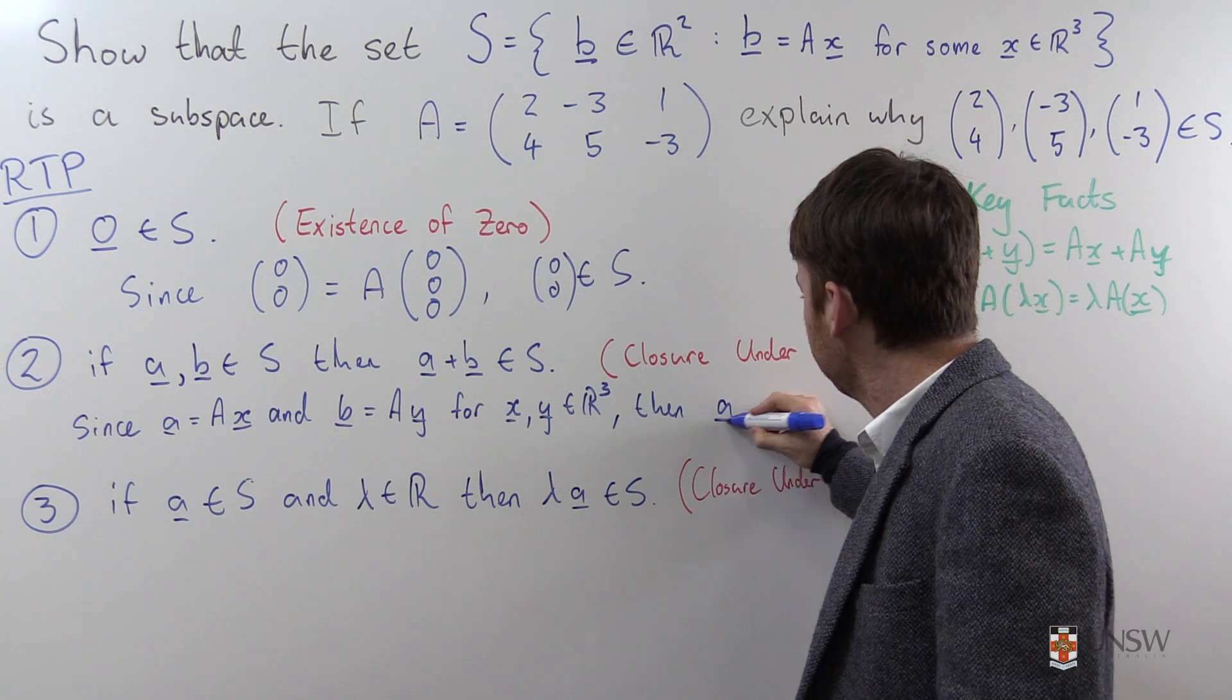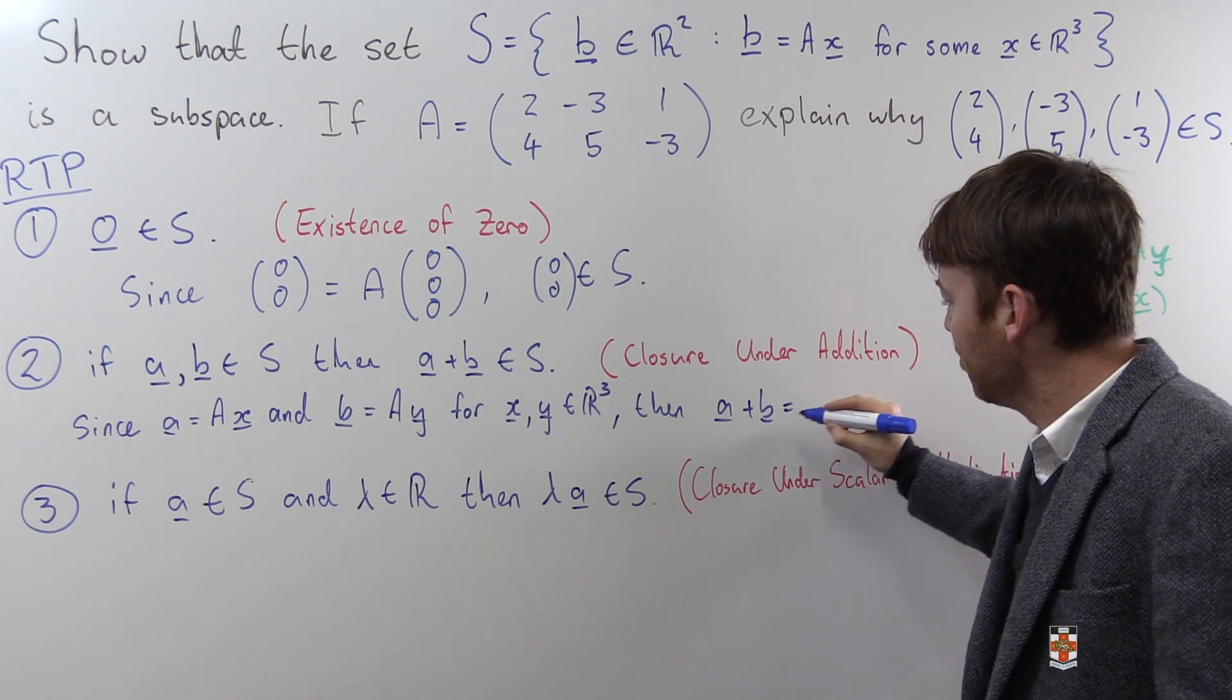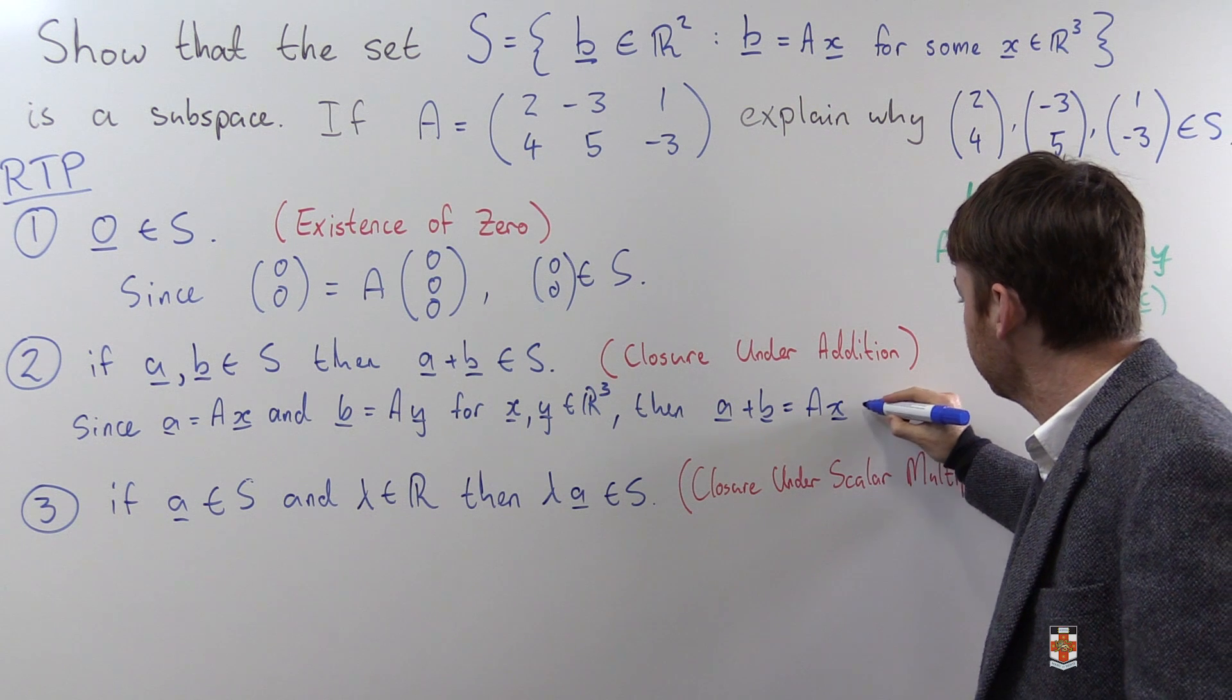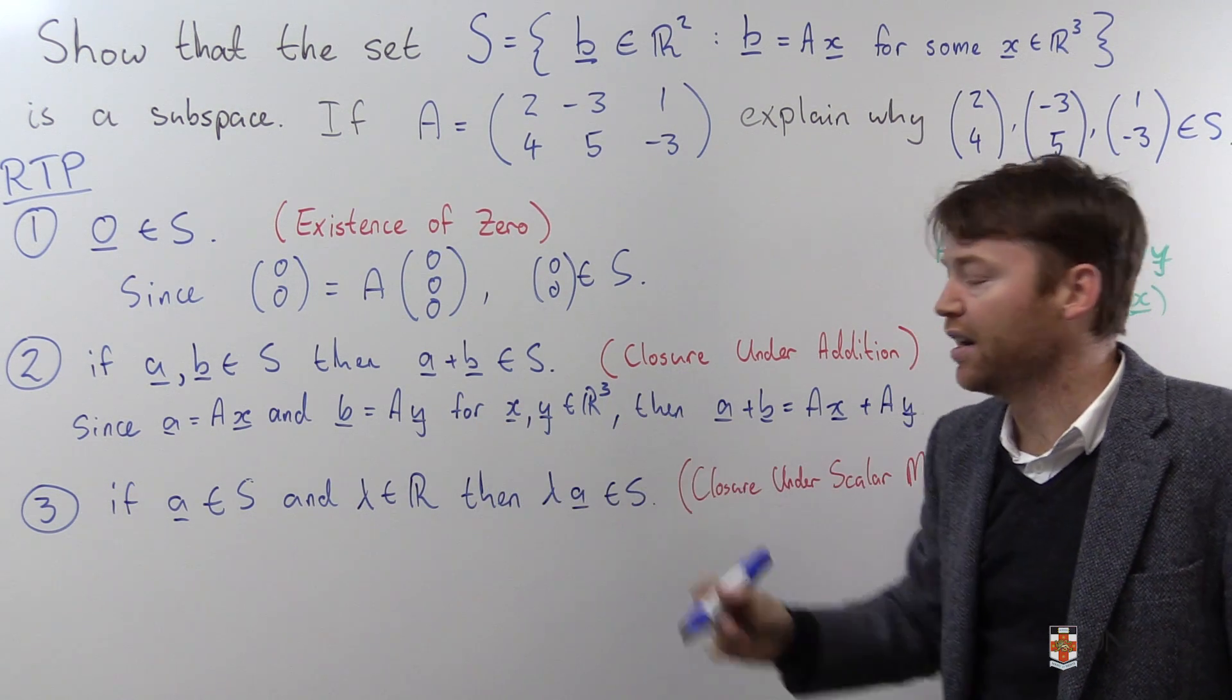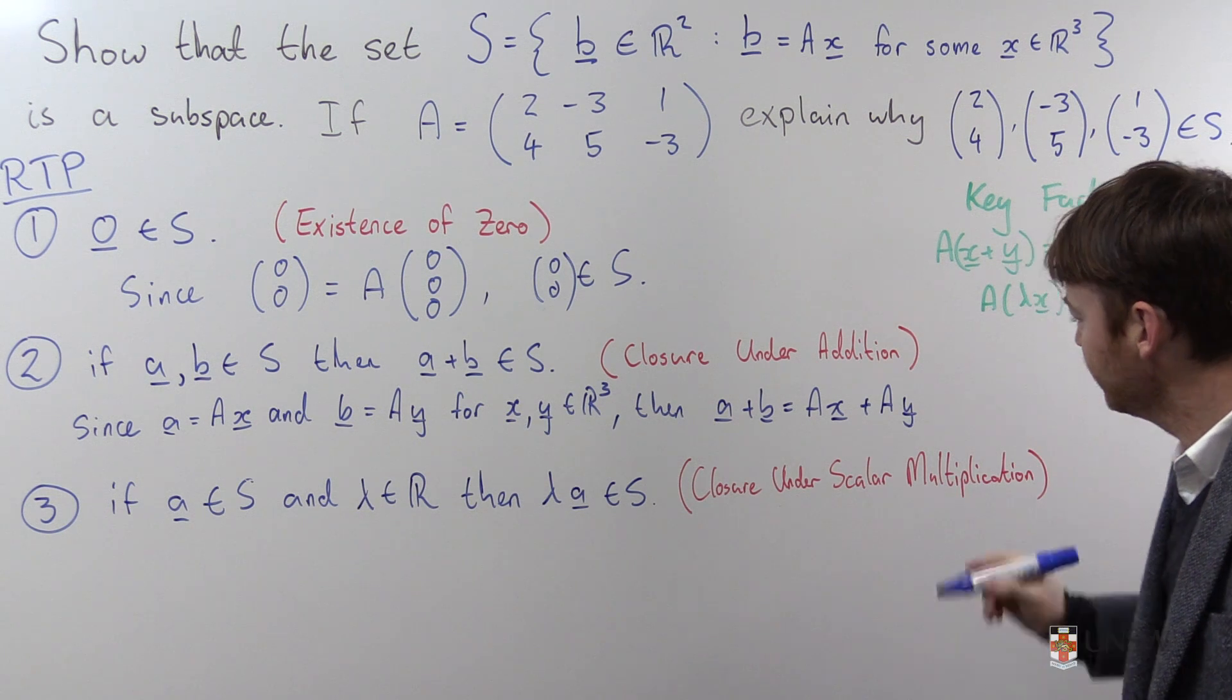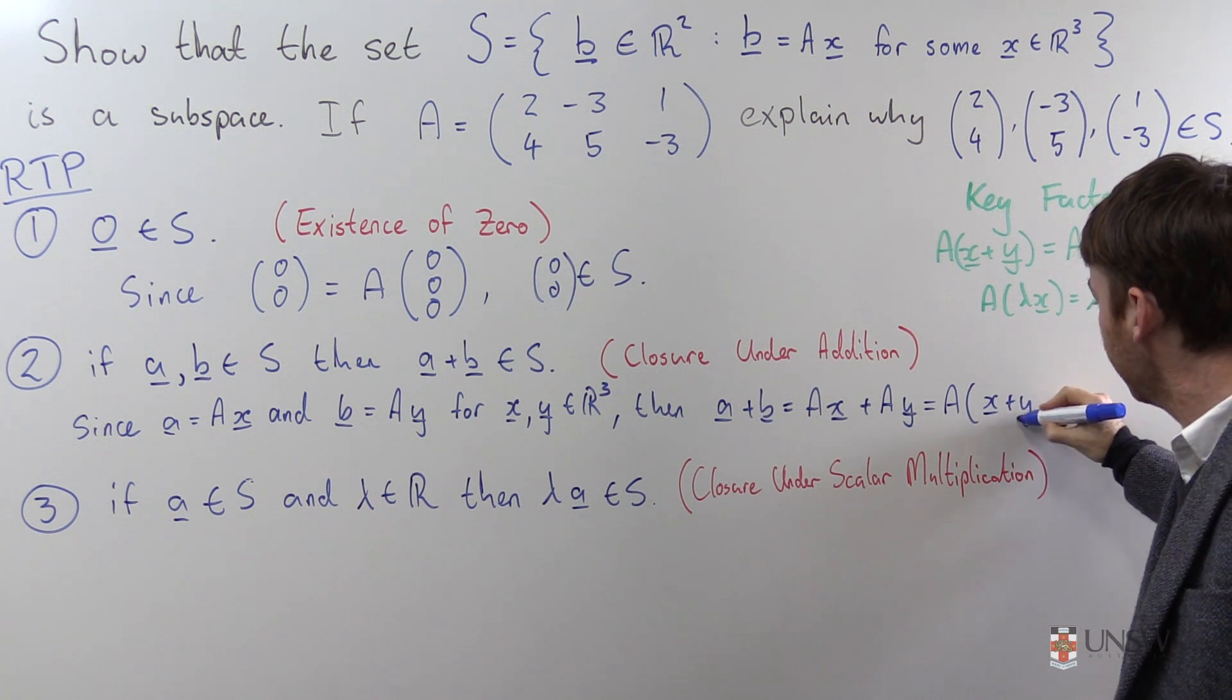Now let's look at their sum. Then A plus B, I want this to be in S. Well, I know what A looks like. A looks like the matrix A times the vector X and B looks like the matrix A times the vector Y. Both A and B are in the image of the matrix A. And I can use my key fact to say that this is equal to A times X plus Y.